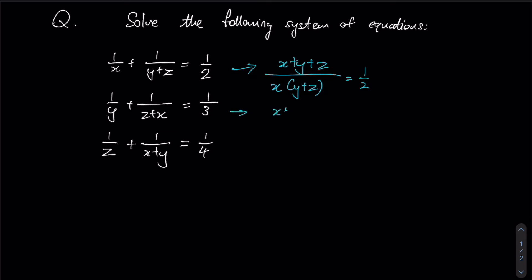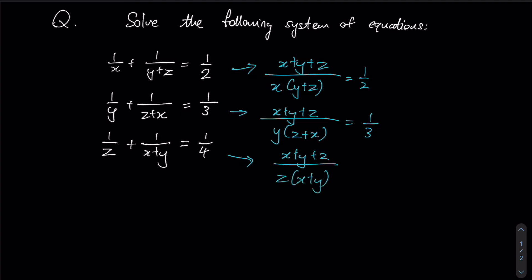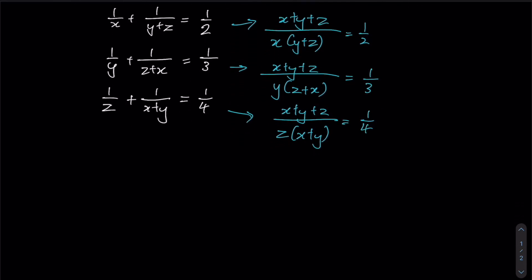If you were to do the same for the other two equations, you realize that all three fractions in fact will give you a common numerator of the sum of x, y, and z. Given that we have a common numerator in all three equations, we are now going to let t be equal to that particular sum.